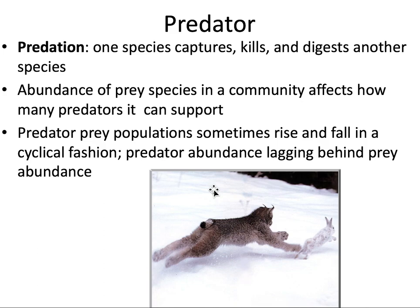Predation involves one species capturing, killing, and digesting another species. Here is a classic predator-prey interaction: a lynx and a hare — predator and prey. The abundance of the prey species is going to limit how many predators that environment can support. In fact, predator and prey populations sometimes follow each other in a cyclical fashion, with predator abundance lagging behind the prey abundance.